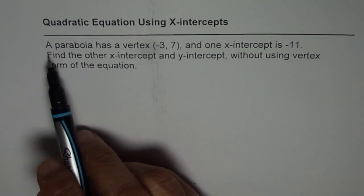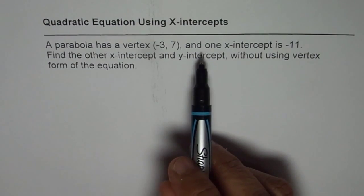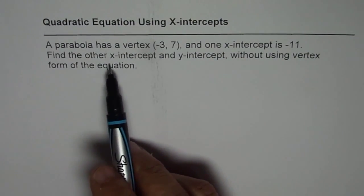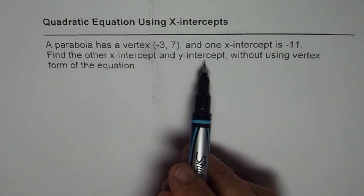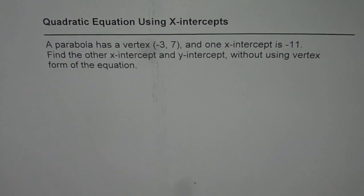Now the question here is: a parabola has a vertex (-3, 7) and one x-intercept is -11. Find the other x-intercept and y-intercept without using vertex form of the equation. So that is the question for you. It is a thinking problem. You can pause the video, think about it, answer, and then look into my suggestion.